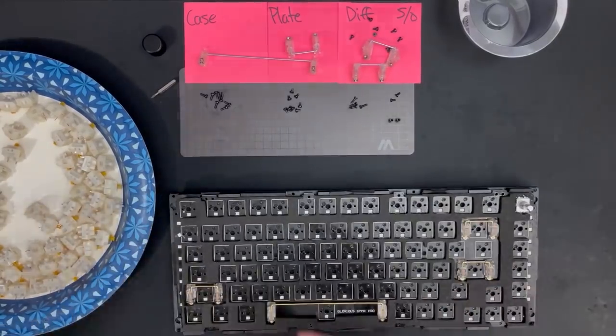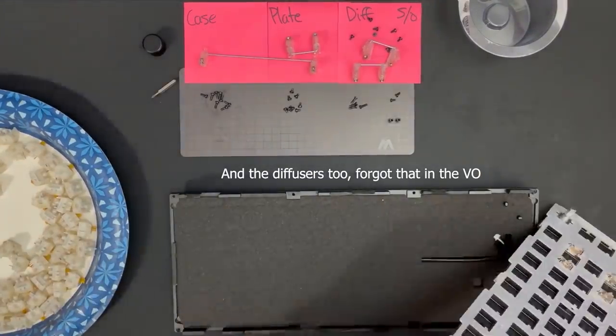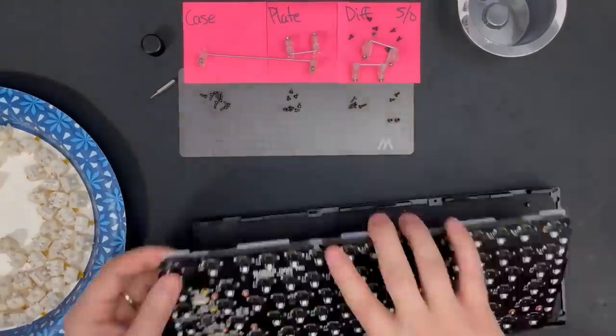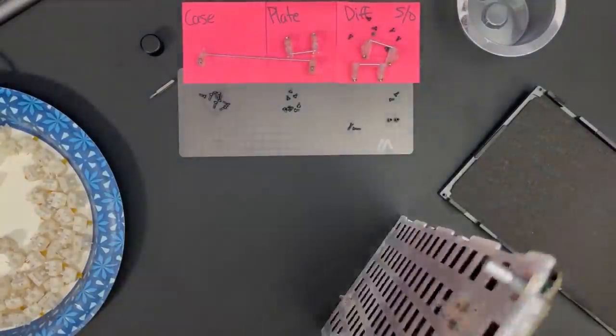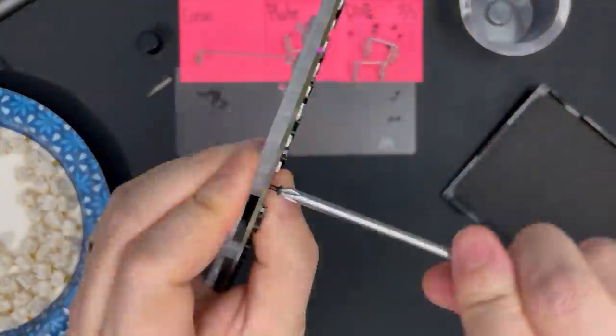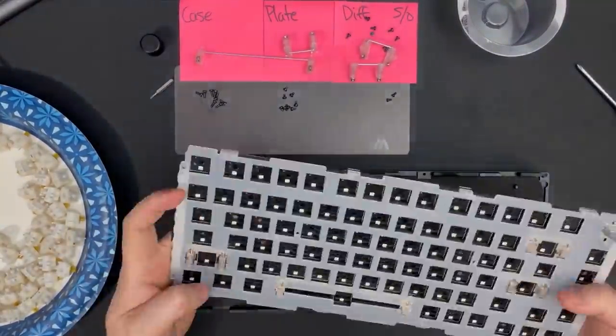Now, let's get the polycarbonate plate put on. I'll be reusing the plate foam, so just line it up and then put the polycarbonate plate over it. We will need to use a little pressure to get all the Durock stabs pushed through the plate openings. Check around the perimeter of the plate to ensure everything is tight and aligned. The polycarbonate plate also comes with its own self-tapping screws, which we'll need to use as it doesn't come pre-threaded. Do not reuse the screws for the aluminum plate.